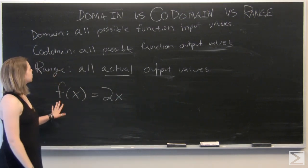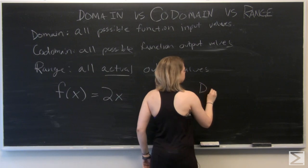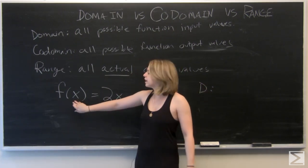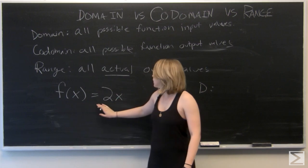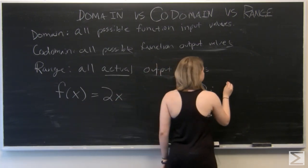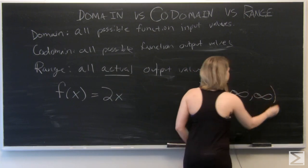So let's start thinking about what our domain could be. Our domain is the set of all real numbers. We could really put anything into this x value and get out a real answer. So our domain is from negative infinity to infinity.